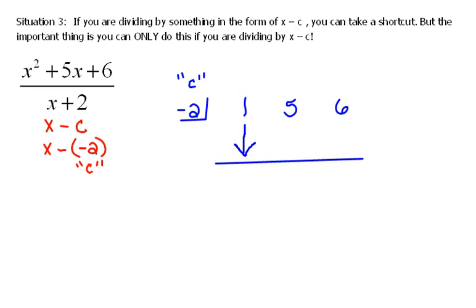We always drop our first number, which would be a 1, and then we multiply diagonally and combine up and down. That's the exact same thing that we do with long division. We multiply diagonally, so negative 2 times 1 would be negative 2, and then we combine up and down.